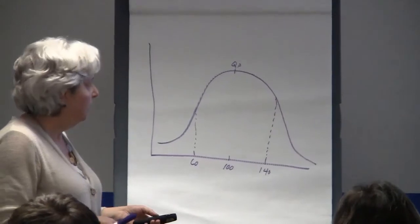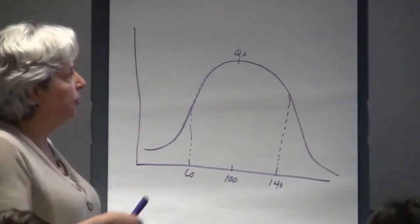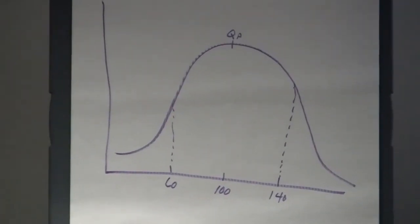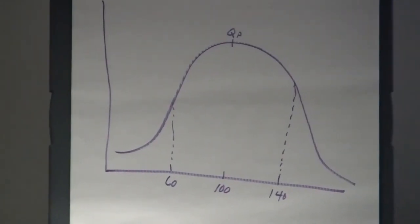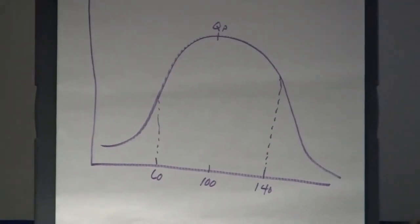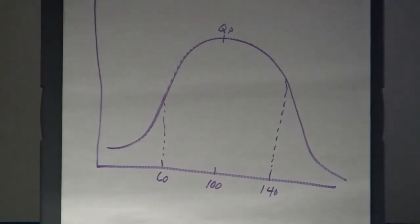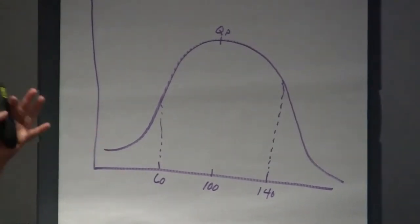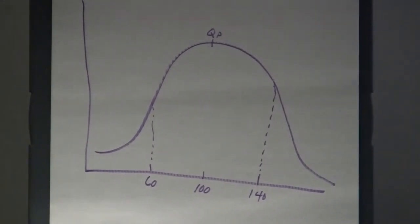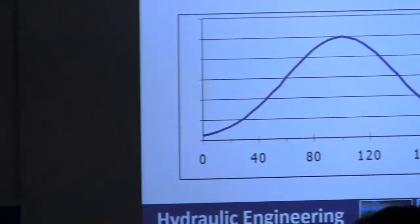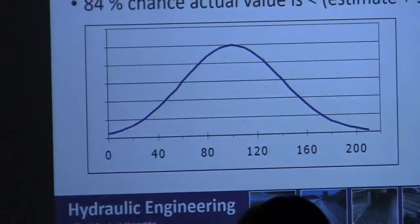So if your standard error was 35% and your Q-peak was 215, you should be able to figure out what the range is. Yes, good.